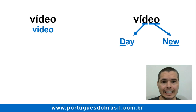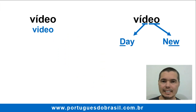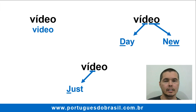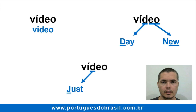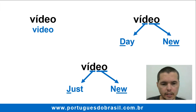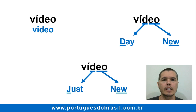But the most common way of pronouncing the word 'video' is this way. The letter D is pronounced the same way as the J in the word 'just.' And the ending E-O, again, is similar to IW in 'new.' So if we put it all together, we say like this: 'video, video, video.'